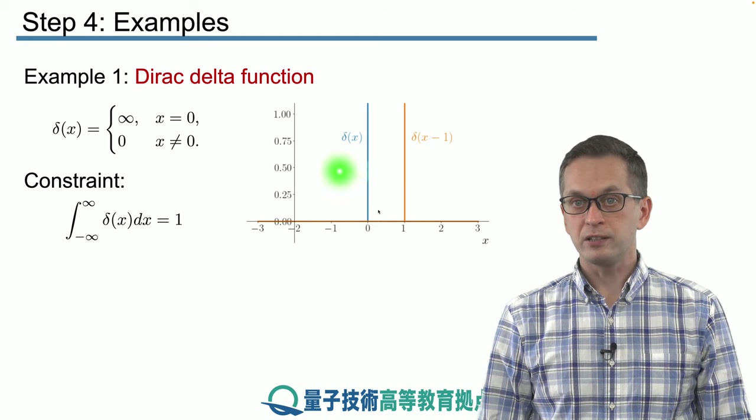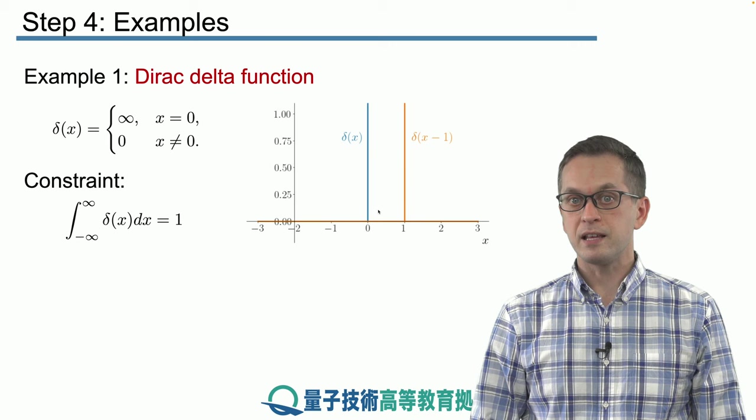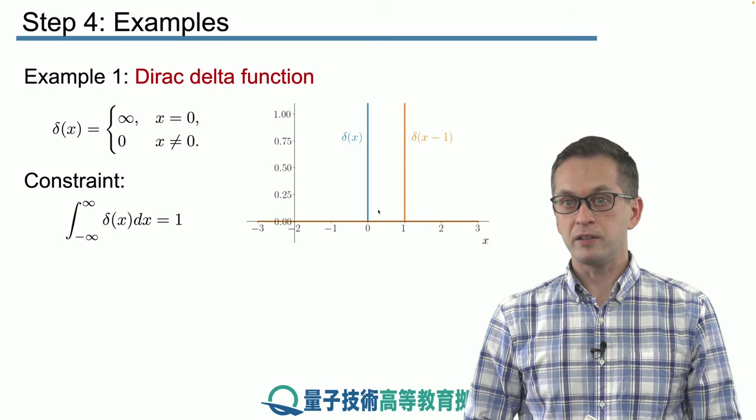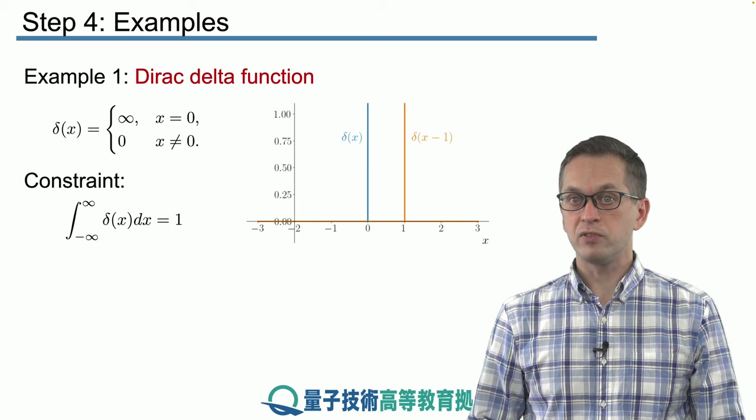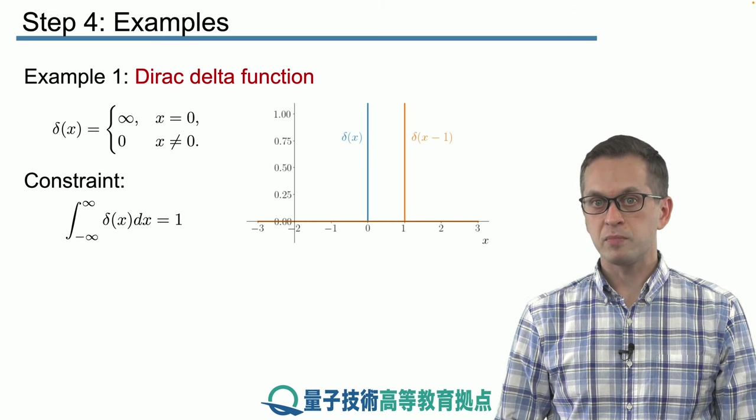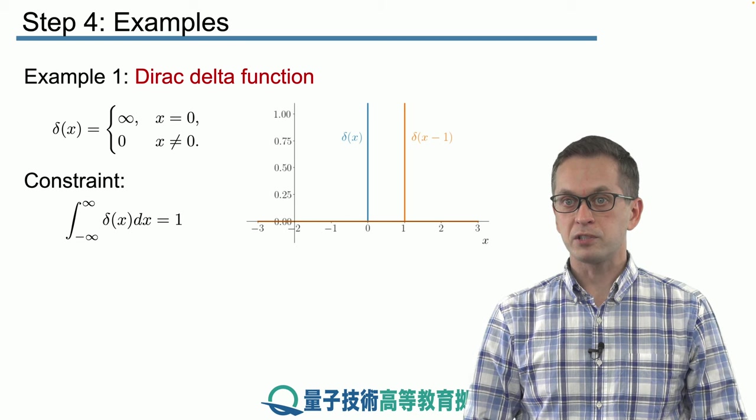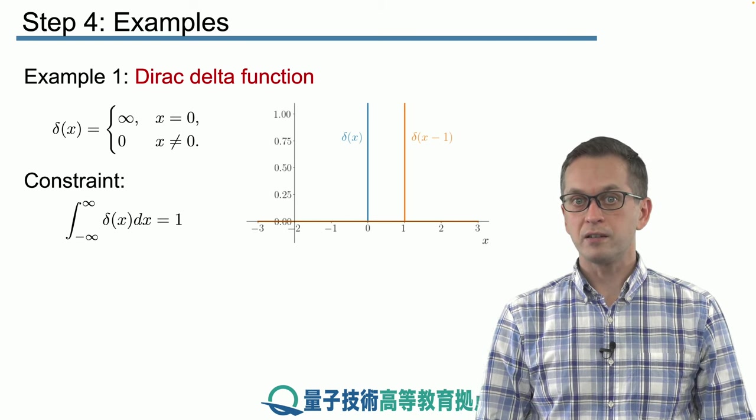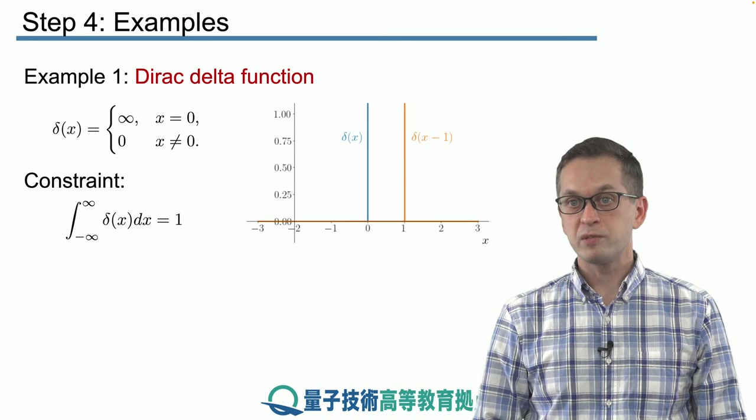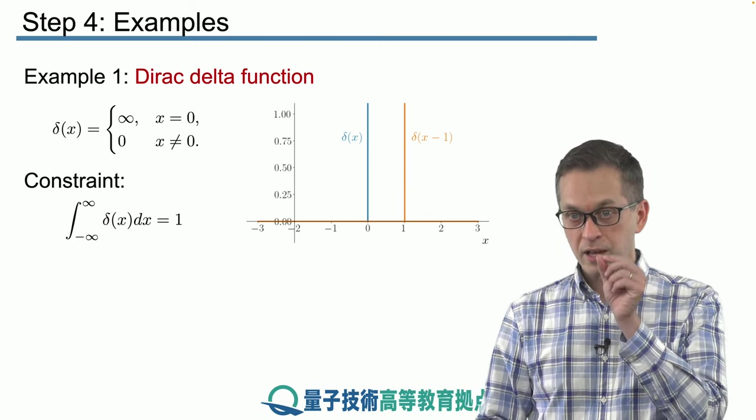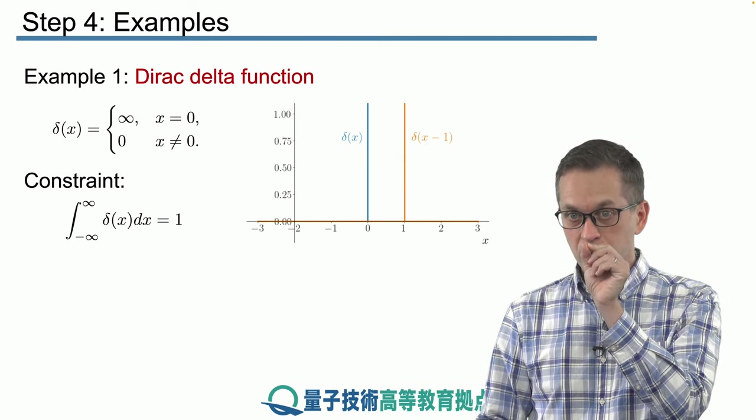And there is one constraint on the delta function, and that is that the area under the delta function, when you integrate from minus infinity to infinity, is equal to 1. So how can this be that the area under the function is finite while the function itself diverges, goes to infinity?